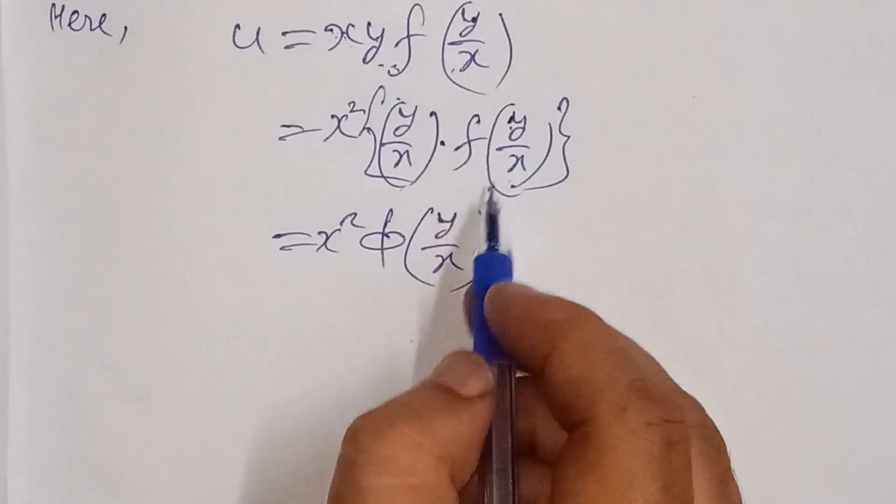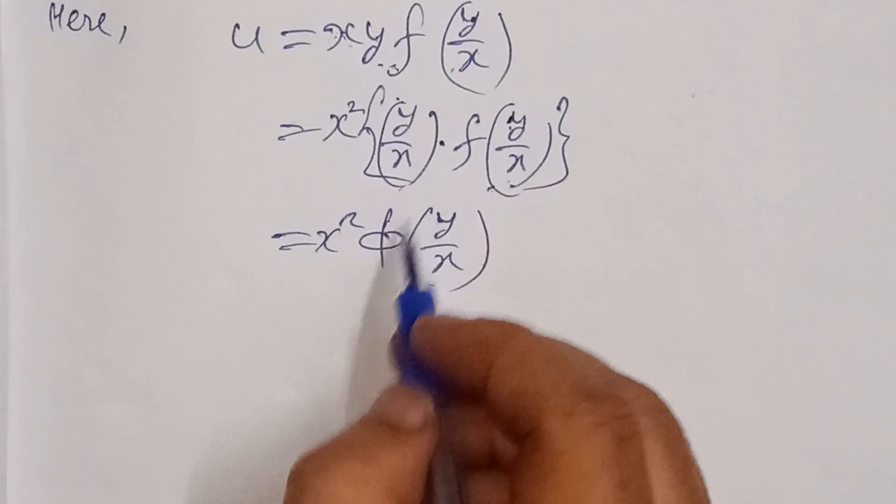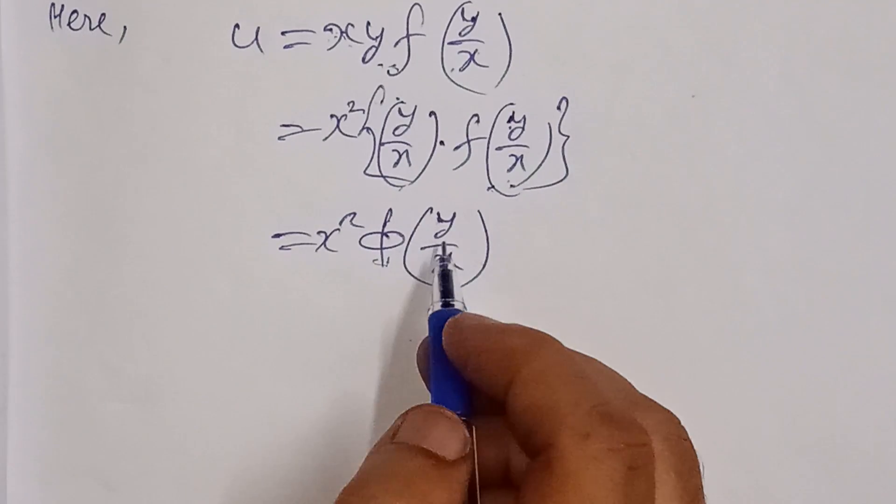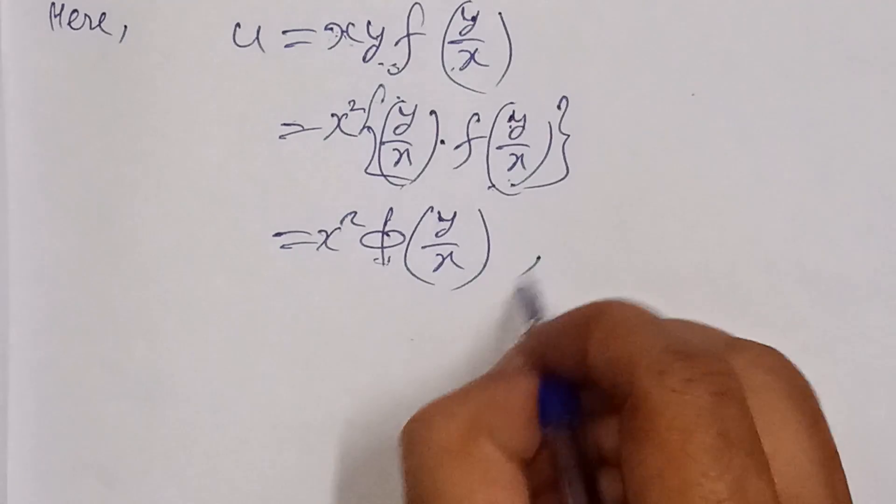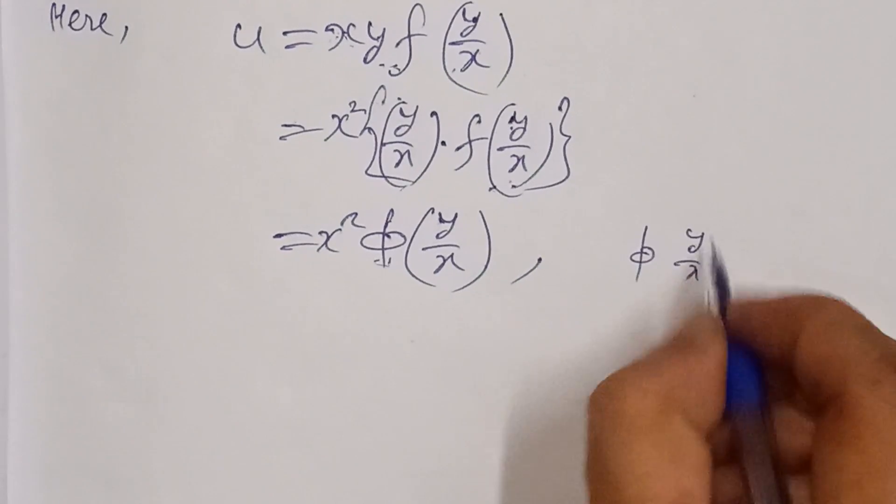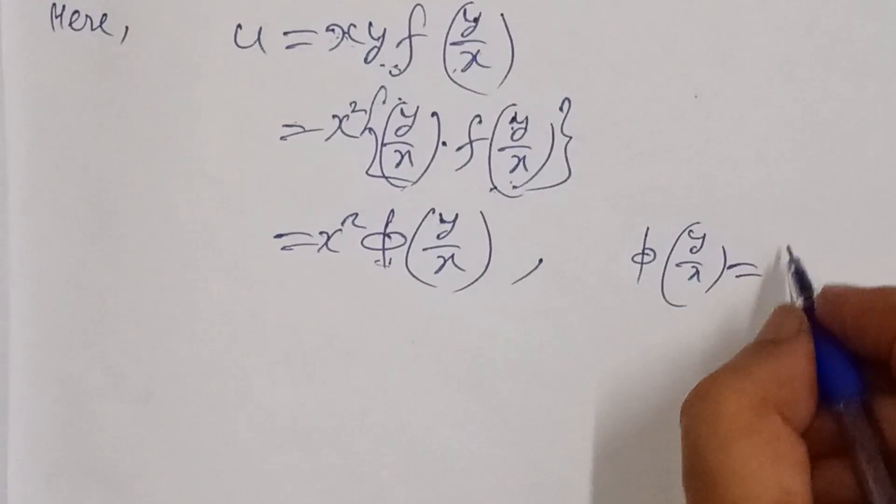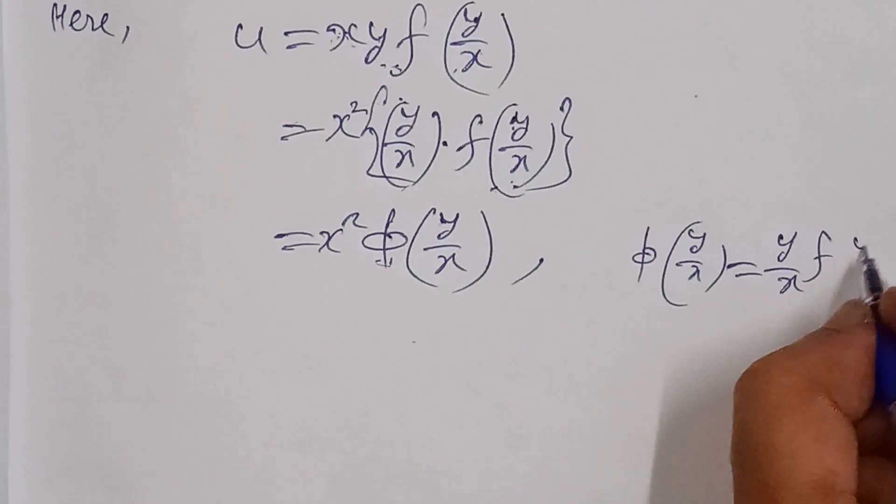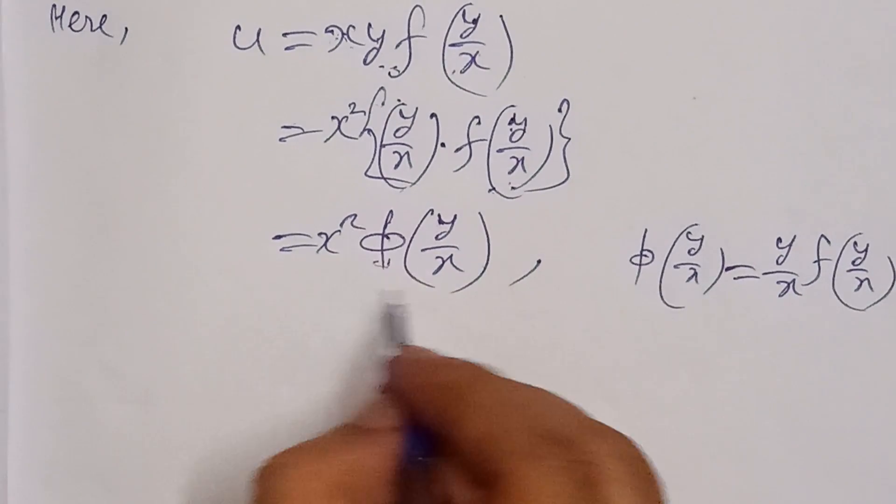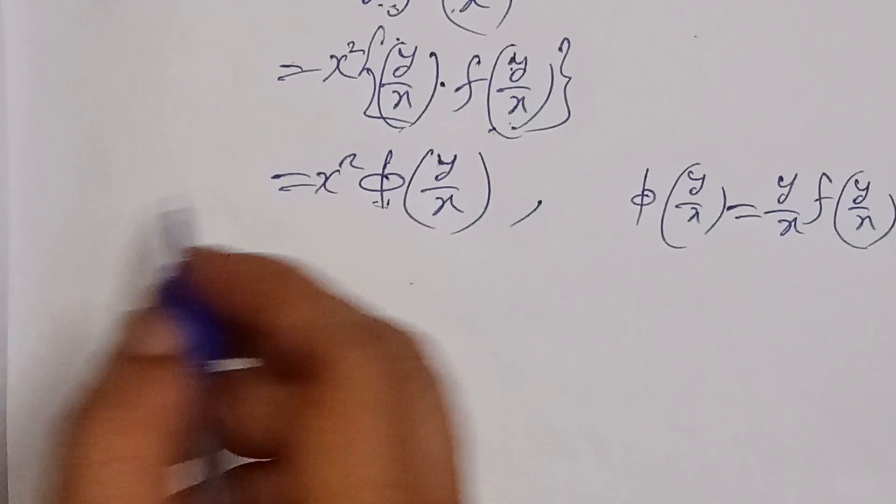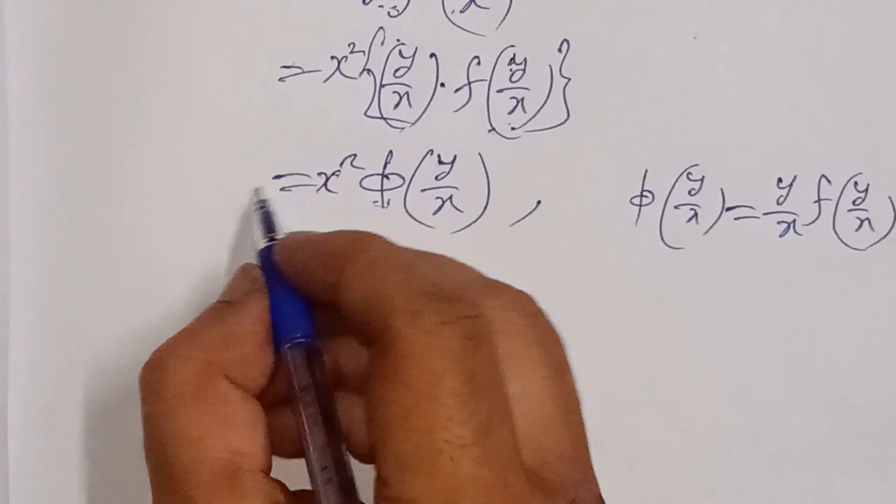And here, the same power, so it is homogeneous. The homogeneous function is already established. The value of phi, which is y upon x times f of y upon x, is a homogeneous function, and u is a homogeneous function.